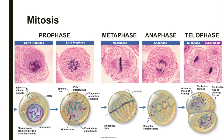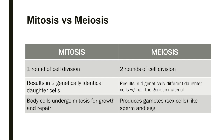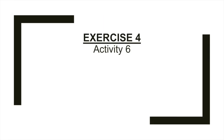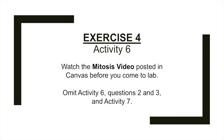The cells of the body undergo mitosis for growth and repair. Most cells divide until puberty, when the adult body size is achieved and overall body growth ceases. After this time, only certain cells carry out routine cell division — for example, the epithelium of the skin will undergo mitosis to repair a scrape or a cut. Unlike mitosis, meiosis is a special type of cell division used to produce gametes, such as sperm and egg cells. Meiosis involves two rounds of cell division and results in four genetically different daughter cells. For exercise four, activity six, please watch the mitosis video posted in week two on Canvas. You'll omit activity six questions 2 and 3, and activity seven.